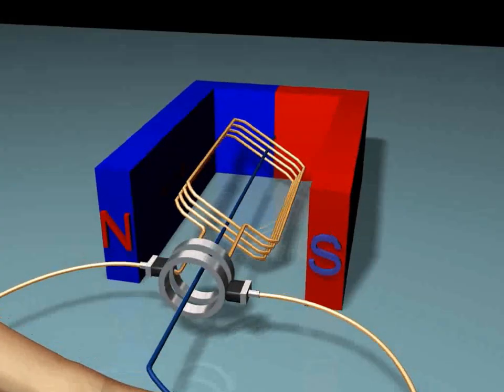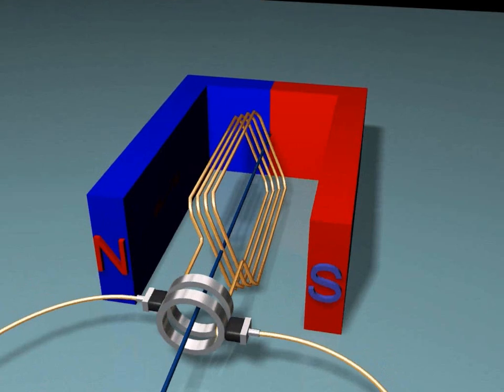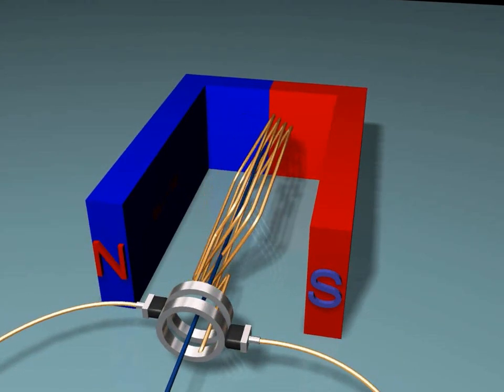It also has a strong magnet with two poles, a north and a south. But unlike the electric motor, in the simple AC generator there is no power supply.